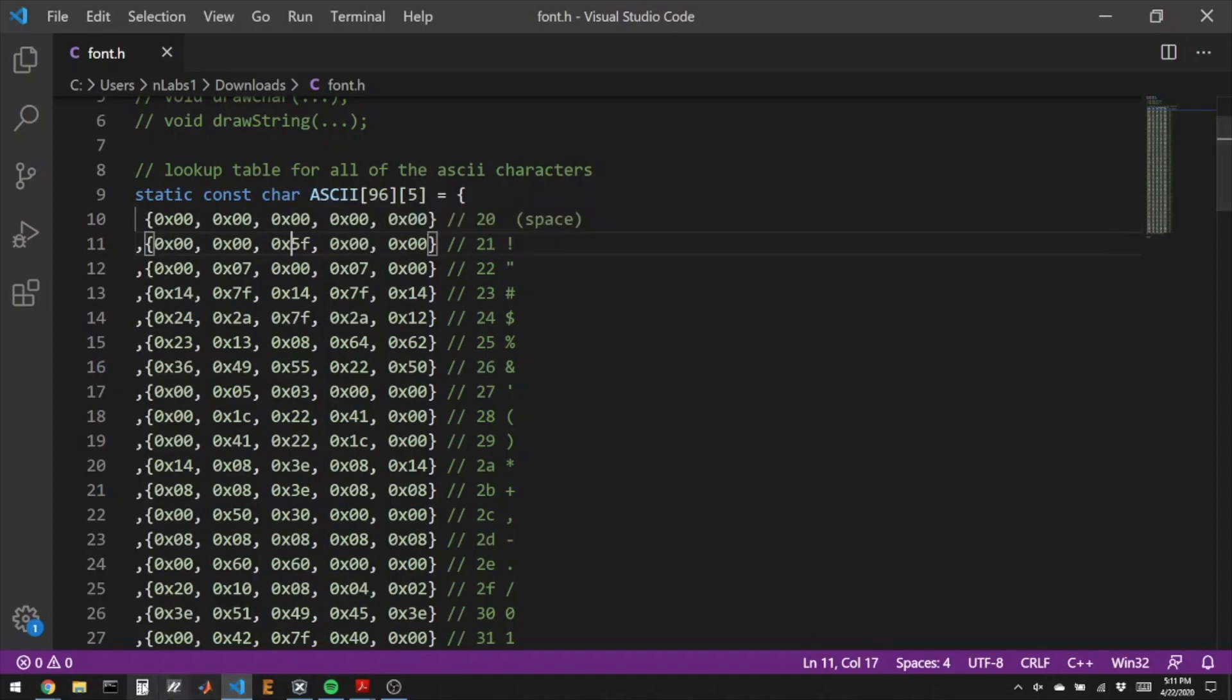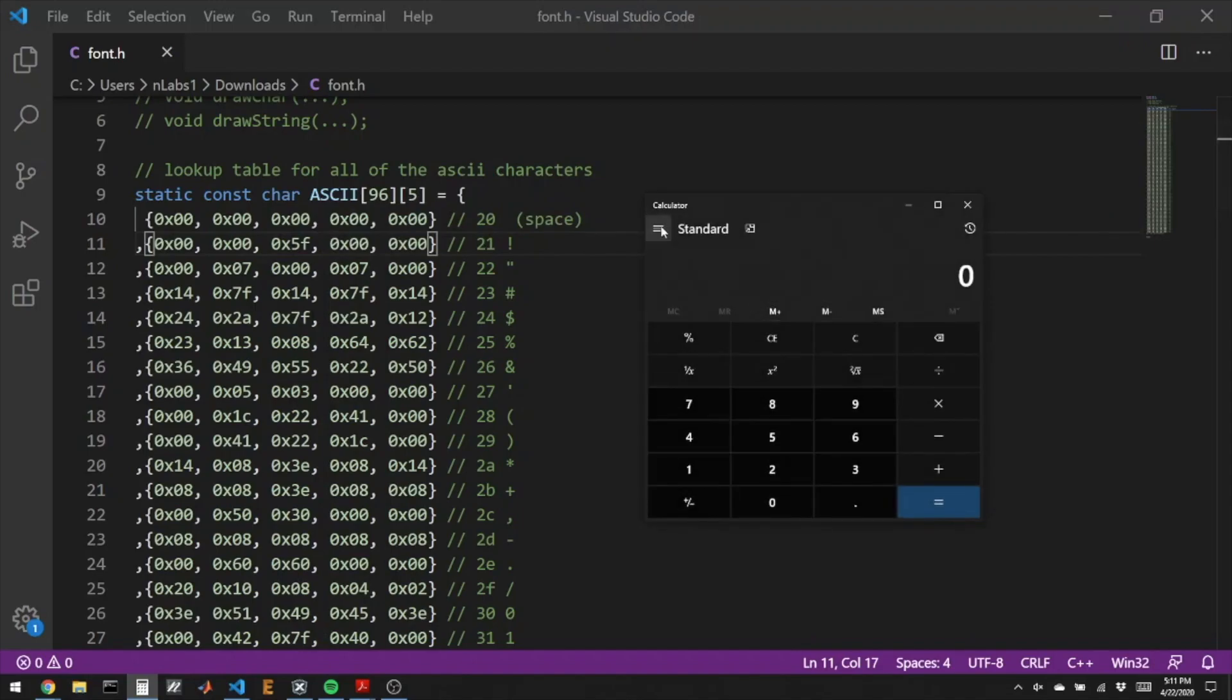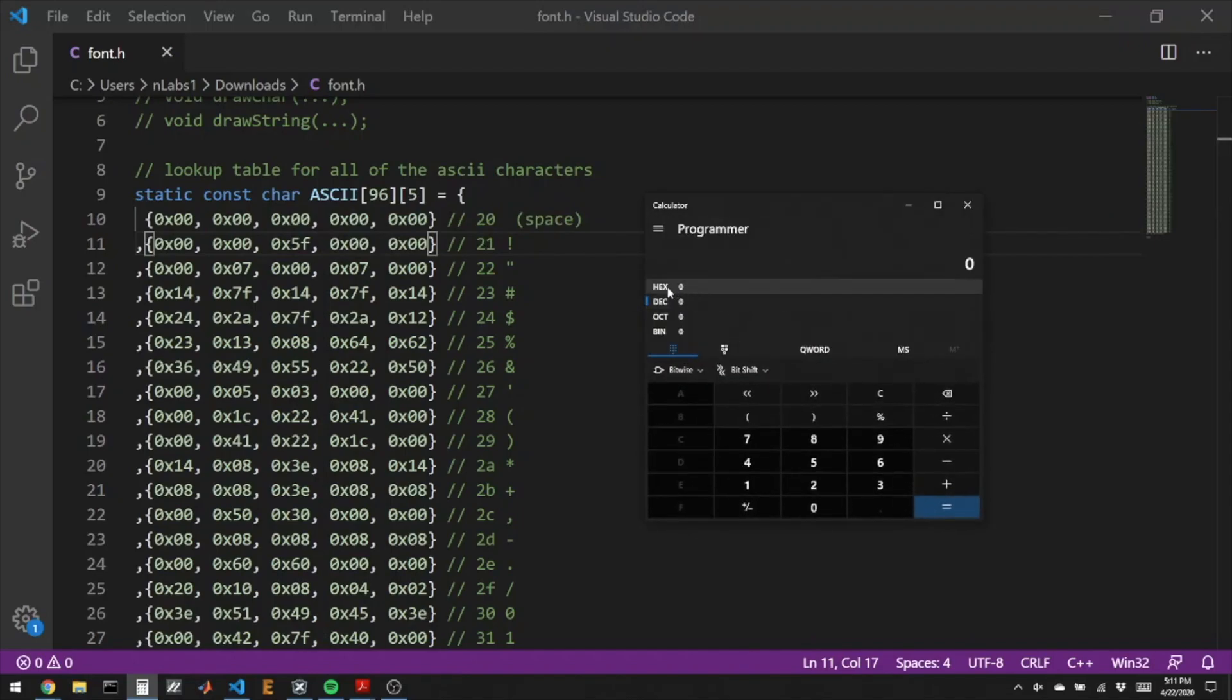And what is 5f look like? We'll look at our calculator in programmer mode. I'll go to hexadecimal and look at 5f. So 5f in binary is 0, 1, 0, 1, 1, 1, 1, 1.